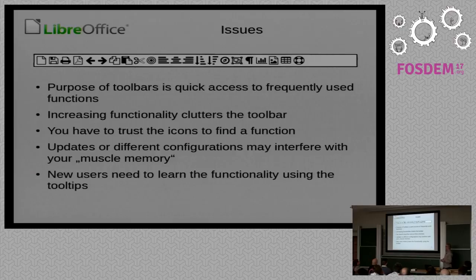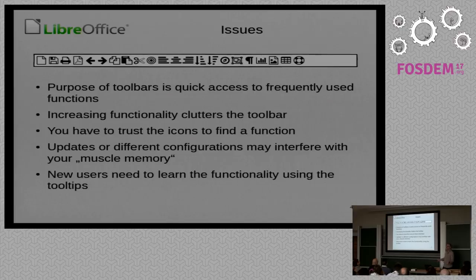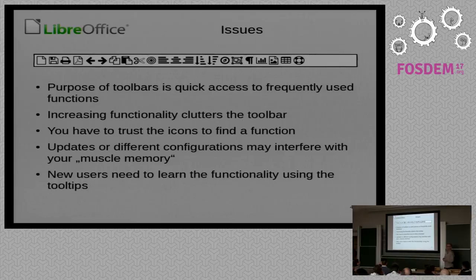Quick access to frequently used functions — that's the purpose of a toolbar. It is filled with icons that you may know. Of course you can figure out that a disk — the second icon from the left — is likely a function to save the document. We made a number of icon tests over the last years that show that a disk is really a good indicator for save. But next to it on the left is 'new' — it could be something different, but it isn't because it's the leftmost icon.